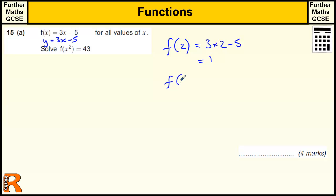But with f of x squared, I'm just replacing that x with an x squared. So I've got 3 times x squared minus 5, and here we're told it equals 43. So that's an equation where it's equal to 43.